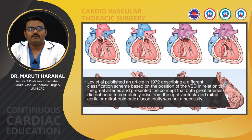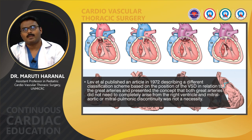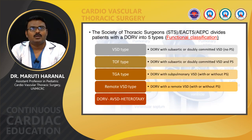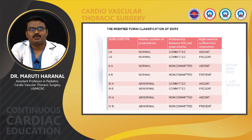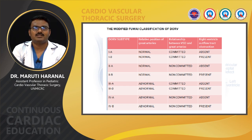Regarding classification, Lev et al. published an article in 1972 describing a classification scheme based on the position of the VSD in relation to the great arteries, presenting the concept that both great arteries did not need to completely arise from the right ventricle, and that mitral-aortic or mitral-pulmonic discontinuity was not a necessary parameter. The Society of Thoracic Surgeons divides patients with DORV into five types: VSD type, TOF type, TGA type, remote VSD, and DORV associated with AVCD and heterotaxy syndrome. The modified Kirklin classification is mainly a surgical classification, which will be covered in the management section.